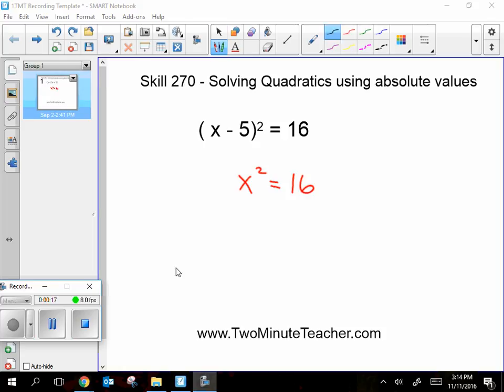If I was solving this, I would take the square root of both sides, and then I'd have the absolute value of x is equal to the square root of 16, which is 4.